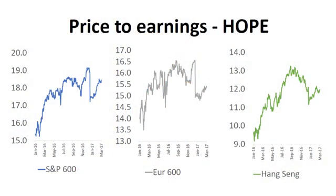So where are we in terms of these global markets? What's been driving this increase since 2016? If we look at the price-to-earnings slide — my hope slide — you can see a lot of this price change has been based on what I call hope. We've got an increase in the US multiple from 15 times to almost 19 times. The European multiple has gone from around 13-14 times to around 15 times. In Hong Kong, we've got an increase from 9 times to 12 times. So there's a lot of hope built in. The question is: do we have earnings growth — EPS growth for 2017 — to back this up?